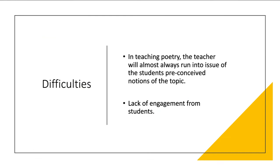In terms of difficulties, in teaching poetry the teacher will almost always encounter an issue of preconceived notions of the topic, which may have developed due to how the subject was taught at junior cycle or due to the technical and complex nature of poetry. Another roadblock is a lack of engagement — if students are afraid of giving a silly or wrong answer, the teacher will struggle to get them to interact in the way necessary in an English classroom. It is therefore very important that a teacher creates an environment of safe learning where a student is not afraid to say anything remotely close to the correct answer. This will aid class dialogue, breed further discussion, and benefit every student by giving them the opportunity to hear their classmates' opinions and add them to their own bank of knowledge.